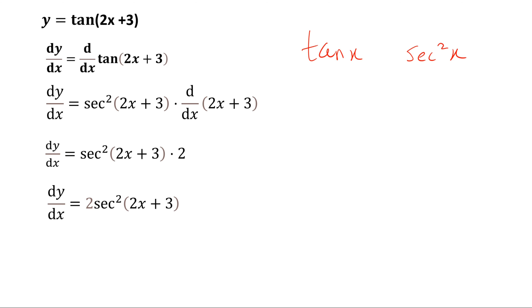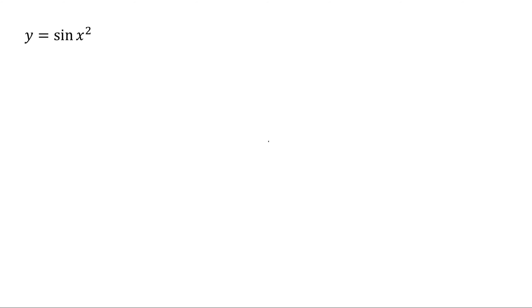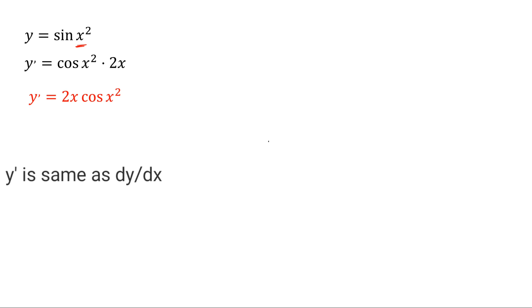So first, differentiate the outer portion of the function, keep the inside the same, and multiply it by the derivative of the inside function. That's it. Next example: y equals to sin x squared. The derivative of sin x is cos x, so we get cos of x squared, and the derivative of x squared is 2x. So the result is cos x squared times 2x, which is 2x cos x squared.